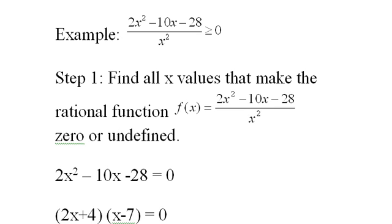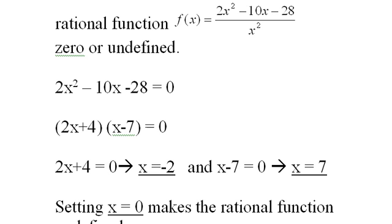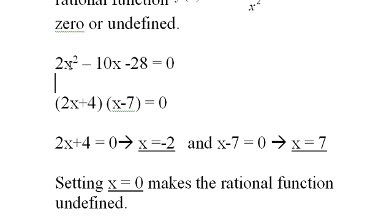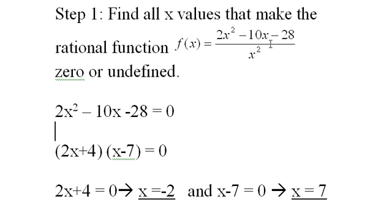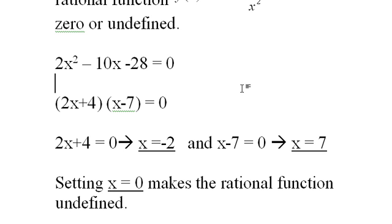So the first step is we take the top, whatever makes the numerator of a rational expression equals zero will make the whole rational expression equals zero. So whatever x's make this top zero will make the whole expression zero. So we set this to zero, and it factors. We don't have to use the quadratic formula. That's because I'm lazy. I always make them factor. And I get that, of course, 2x plus 4 equals zero, 2x equals negative 2, and x equals 7, positive 7.